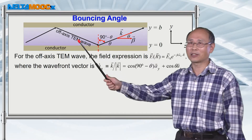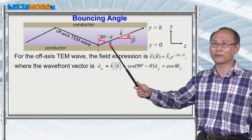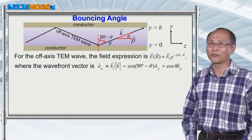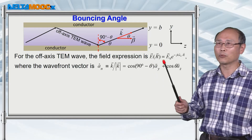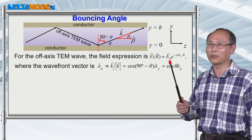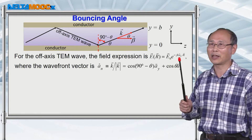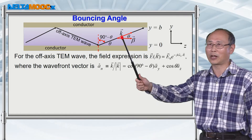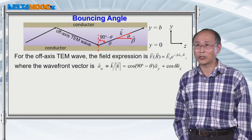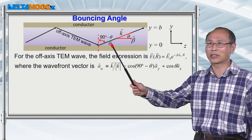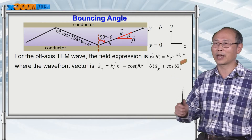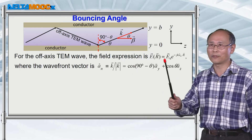For this off-axis TEM wave, we can write down the expression given this bouncing angle θ — the propagation angle from the boundary. Picking up the general expression for a TEM wave from previous discussion, we write the field as an amplitude in front of a complex exponential. The unit vector aₙ tells you the propagation direction of this TEM wave, which is the direction of k, the wavefront vector. Recalling the plane wave with directional cosines, given the bouncing angle, you can write down aₙ quickly as cosine β and cosine γ, completing the field expression.